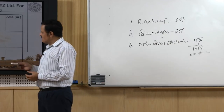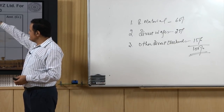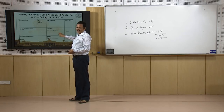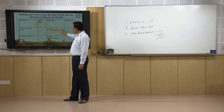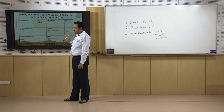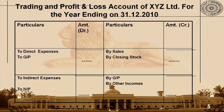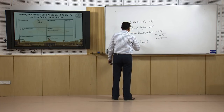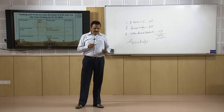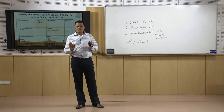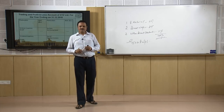We put these items in the trading account — the upper part. The trading account is basically a comparison of direct incomes with direct expenses. The direct incomes are from the total output, and expenses are these three. If the income side is bigger than the expense side, the difference is gross profit — GP. Gross profit is not the final profit; it is not the final divisible profit to be enjoyed by the business.